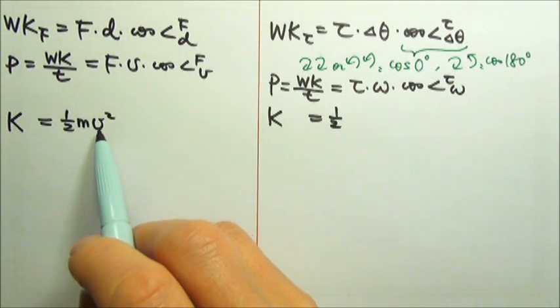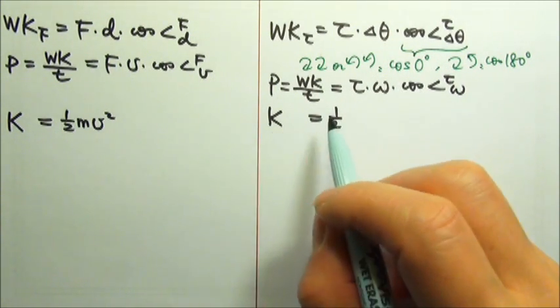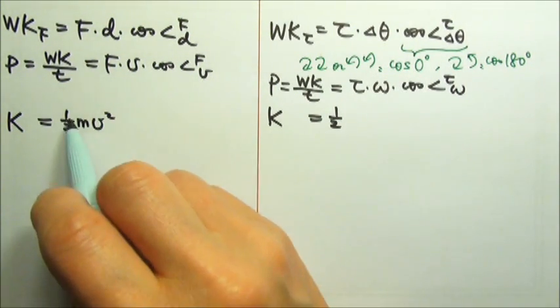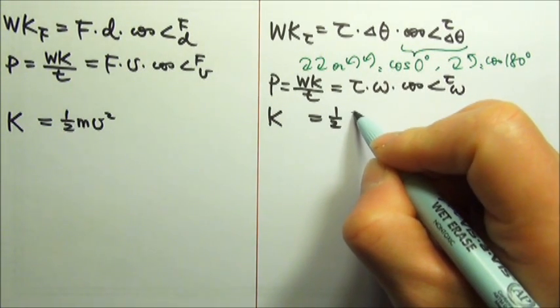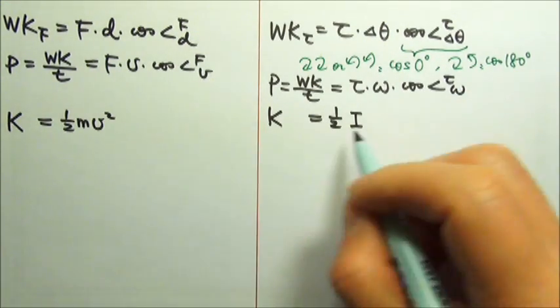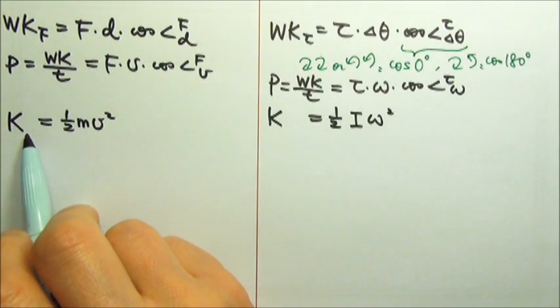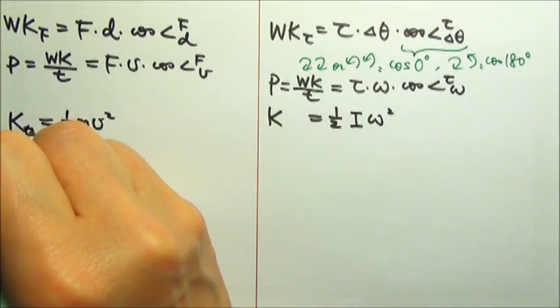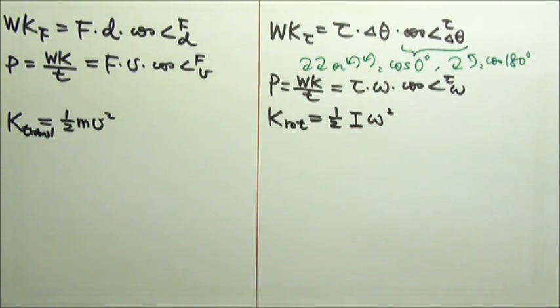Kinetic energy is one-half mv squared. So the rotational version is kinetic energy is one-half, what's the rotational counterpart for the mass? It is the rotational inertia or moment of inertia, I, and then times the omega squared. Now this is called the translational kinetic energy, and this one is called the rotational kinetic energy.